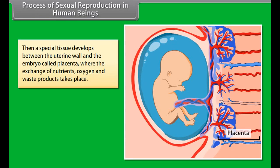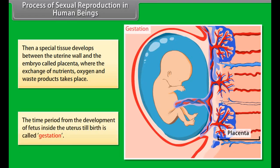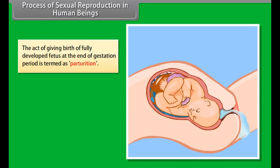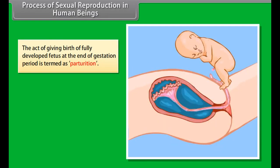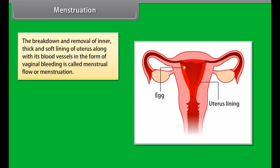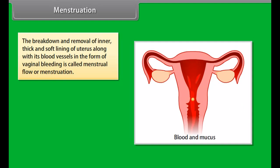The vagina acts as a copulation canal as semen is discharged into it during copulation, and as a birth canal as the baby passes through it during childbirth. The male gametes or sperms are highly active and mobile, moving up through the cervix into the uterus and then passing into the fallopian tubes. In the fallopian tube, only one sperm fertilizes the ovum to form a zygote — this is called fertilization. It occurs only if the sperm enters the fallopian tube during the ovulatory period.